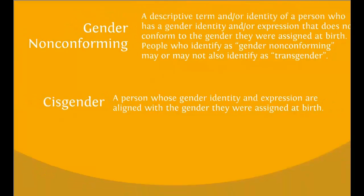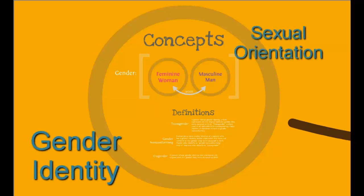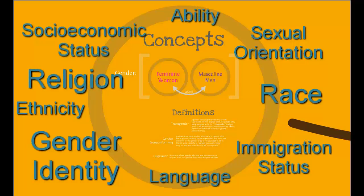Those are the definitions we'll be working with throughout this webinar. But identity is more complex than that. As we saw with Willow, for any number of reasons, your students may not express themselves in ways that seem aligned with their gender identity. You can never know someone's gender identity simply by looking at them. It's also important to note that for each of us, our gender identity — or how we identify in terms of our gender — is distinct from our sexual orientation, or who we're attracted to emotionally and physically. Everyone has both a gender identity and a sexual orientation, along with identities based on race, ethnicity, socioeconomic status, immigration status, religion, language, ability, and others that intersect and impact our experiences as we move through the world.